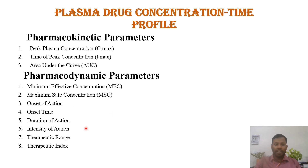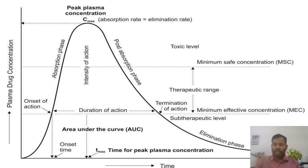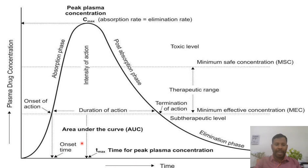All these points I will discuss one by one with the help of a graph. That graph is plotted between plasma concentration versus time. Here in this graph, we are having time on the x-axis and plasma concentration on the y-axis. If we plot a curve between time and plasma concentration, the graph will look like this.